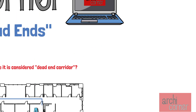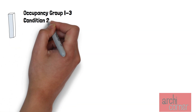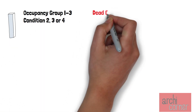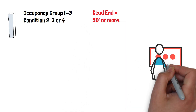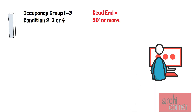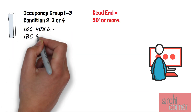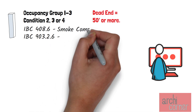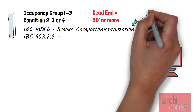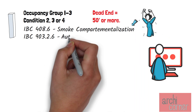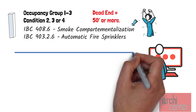Now there are three exceptions to this. Exception number one is if you're working on a project that meets the requirements for an occupancy group I3, conditions 2, 3, or 4, then their travel length is permitted to increase to 50 feet. If you're wondering what occupancy groups are, there will be a link coming up on your screen. The reason that this exception exists is because IBC section 408.6 and 903.2.6 require these occupancy group conditions to have smoke compartmentalization and automatic sprinkler protection. The added fire life safety features allow for this exception.